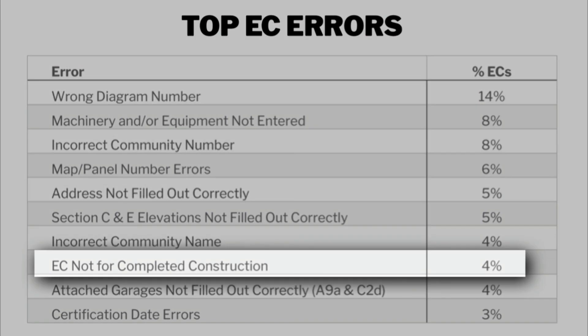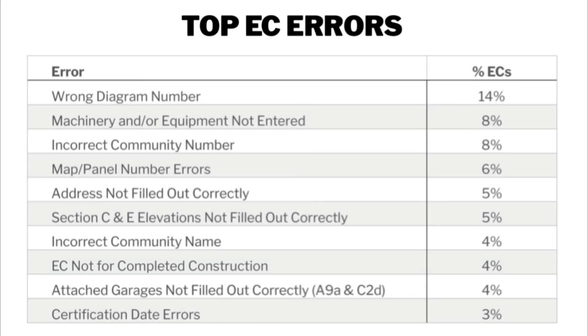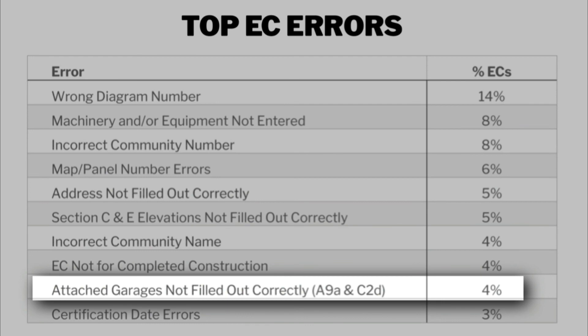If you receive an EC not marked for finished construction when it should be, confirm that it was finished with the surveyor when he or she shot the elevations, then use the memo of correction to make the fix. Error number nine — attached garages not filled out correctly — is something you should really confer with the surveyor about, as it may or may not be an attached garage as defined by FEMA. See the other elevation certificate videos for Sections A and C. Talk it over with the surveyor and see if a new EC can be created to incorporate any needed changes.